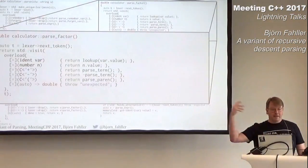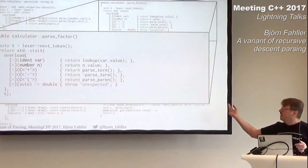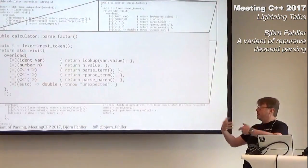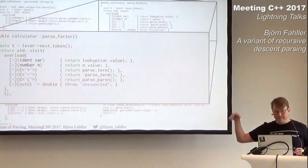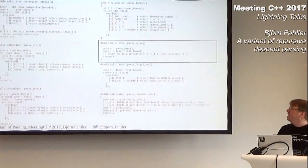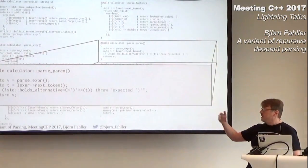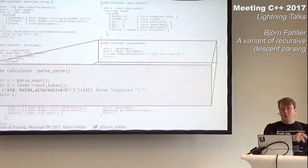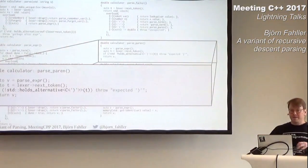parse_factor: get a token, visit it, and see — is it an identifier? Then look it up. Is it a number? Return the value. If it's a plus, parse a term. If it's a minus, parse a term and negate it. If it's an open parenthesis, parse a parenthesis expression. And if it's anything else, throw. For parse_parentheses: parse the expression, look at the next token, and with a variant we can ask it — is this the type you hold? We check: does it hold a closing parenthesis? Then we're good, return the value. If not, throw and say something is wrong with this expression.